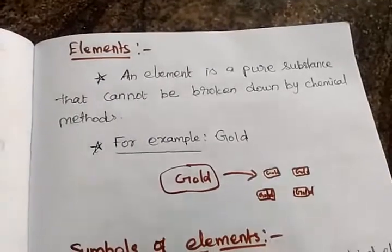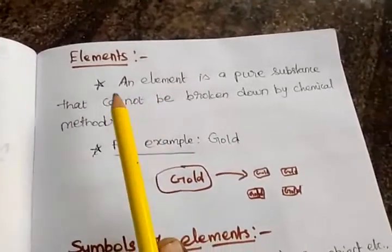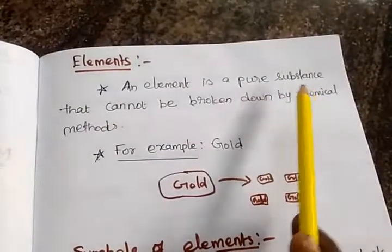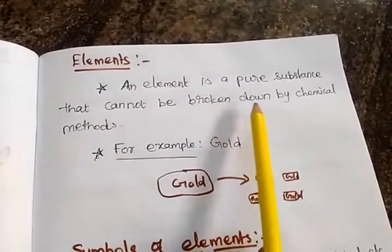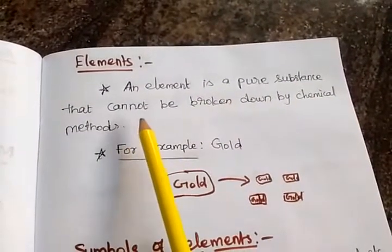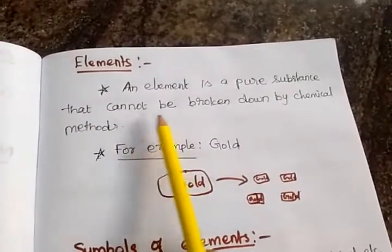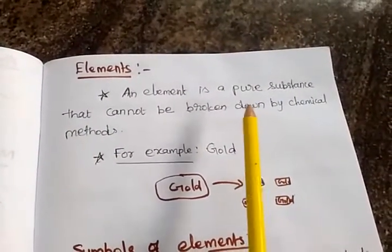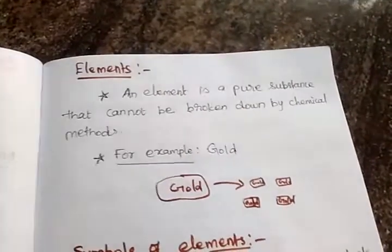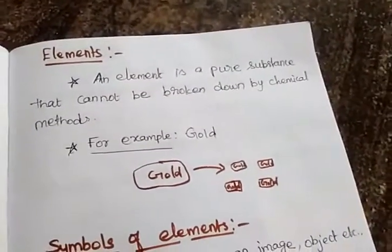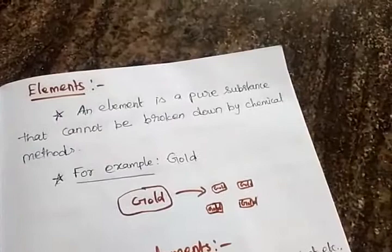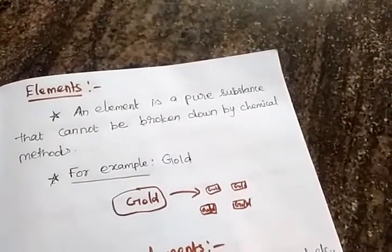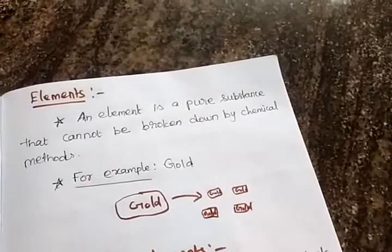Next, what is an element? An element is a pure substance that cannot be broken down by chemical methods. For example, the element gold cannot be broken down into anything other than gold.